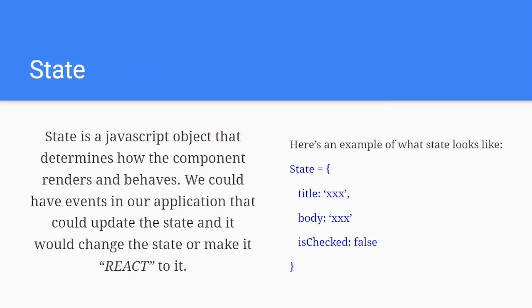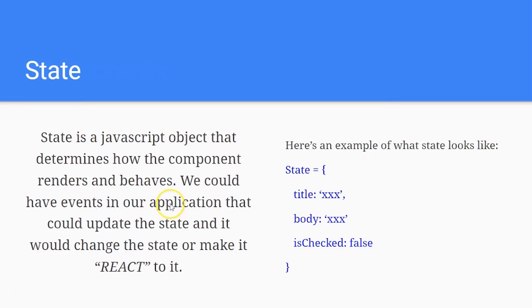If something happens — like a user clicks something, submits something, or some changes are made — that's going to change the state. Here's an example of what state looks like in code. It's a JavaScript object with curly braces and properties, like title and body and a boolean.